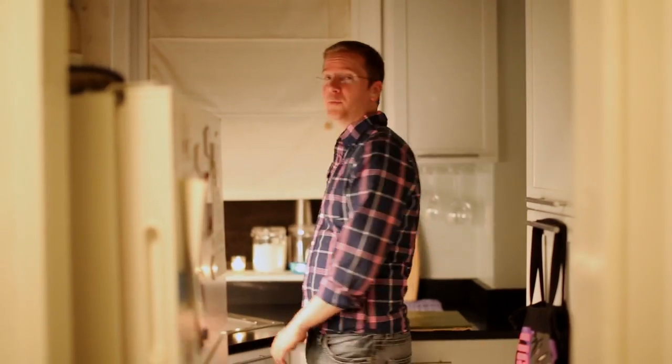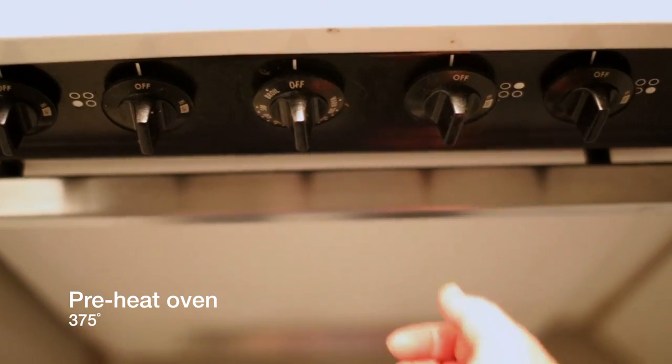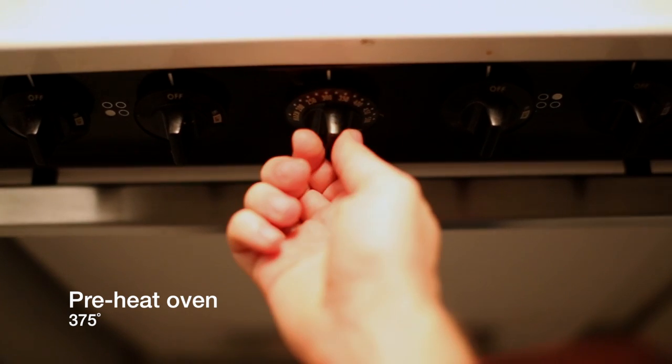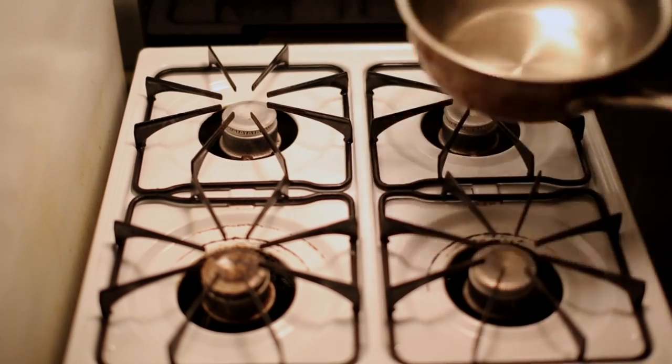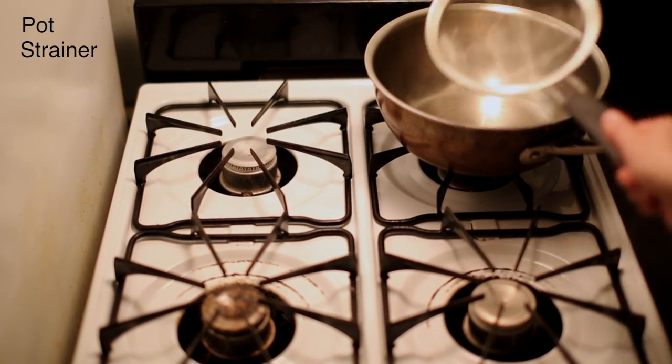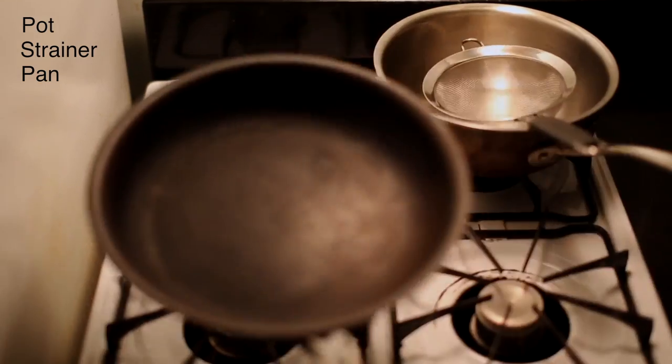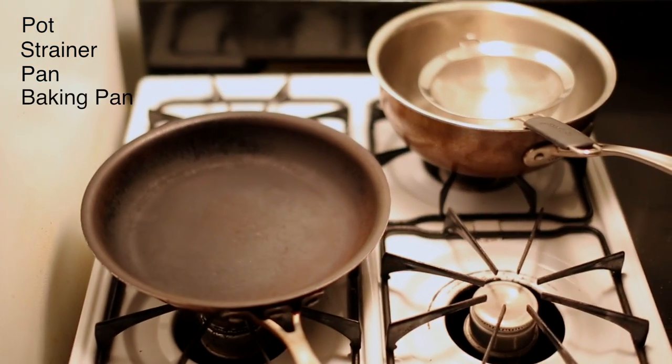This is what a kitchen looks like in Boston. I hope you have a bigger place to work. The first thing you need to do is preheat your oven to 375 degrees. You'll need a pot, a straining apparatus, a pan, and a larger baking pan.